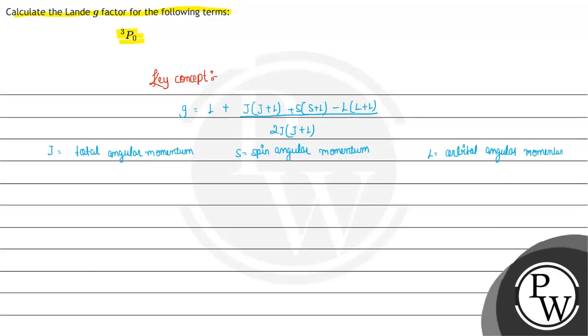One more thing: the notation is given as X-SPDF, where X is the multiplicity which is given by 2s+1. Using the key concept, let's solve the question. Here our notation is 3P0.